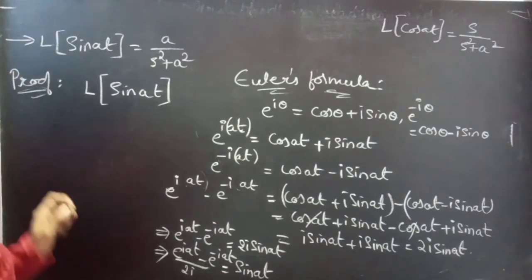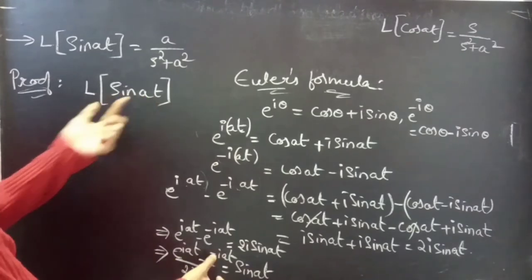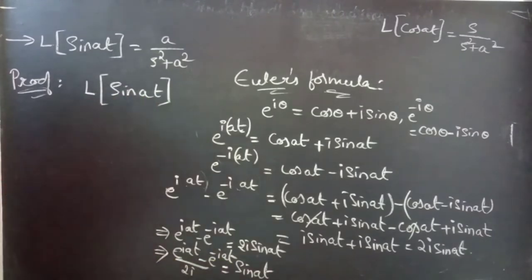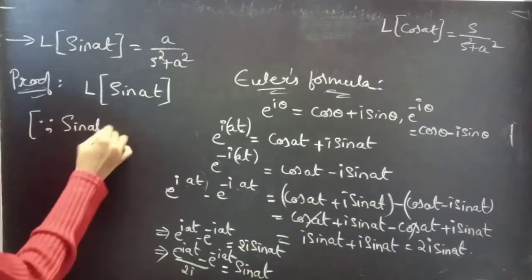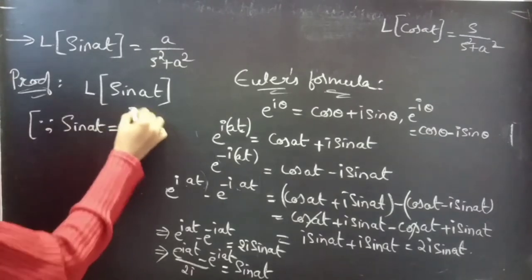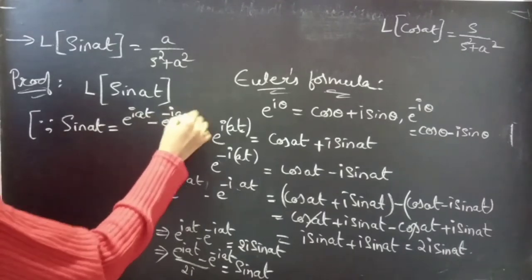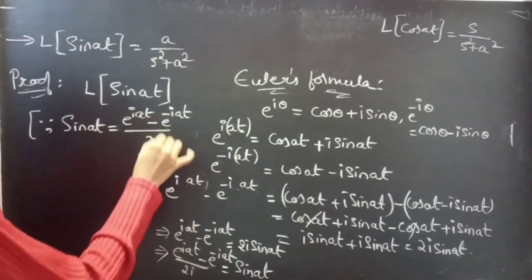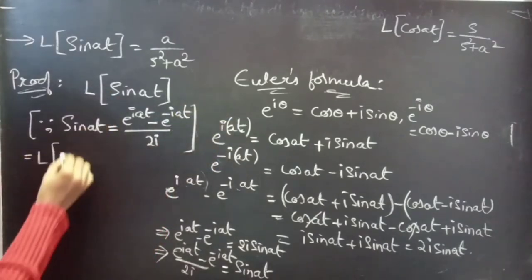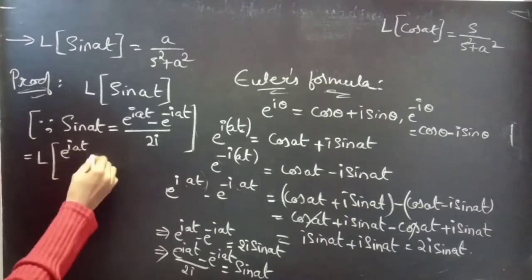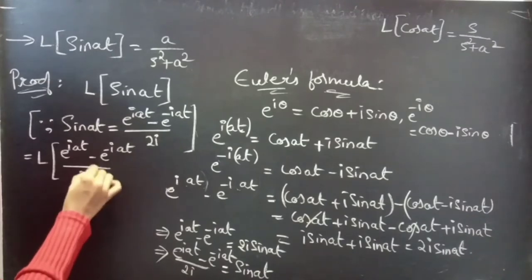Now we can replace sine(at) by e power i-a-t minus e power minus i-a-t divided by 2i. So L of sine(at) becomes L of e power i-a-t minus e power minus i-a-t divided by 2i.